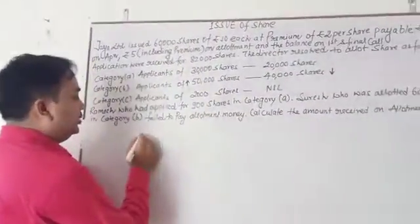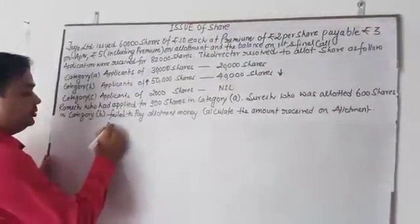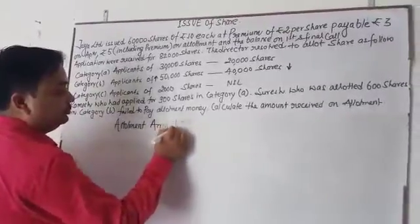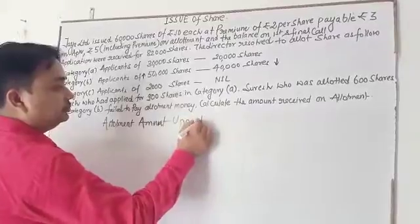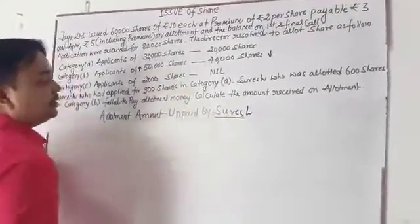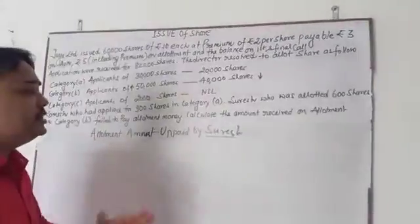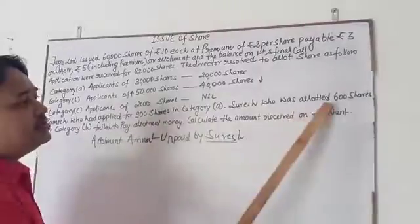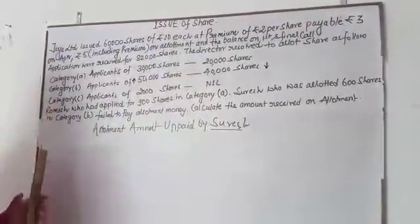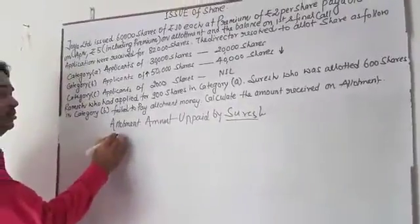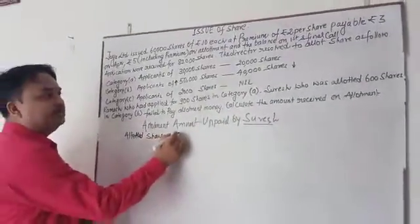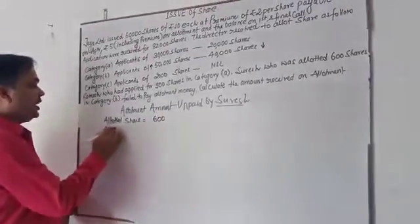You have to calculate the allotment amount unpaid — unpaid means not paid — by Suresh. Why are we going to calculate for Suresh? Suresh is a shareholder. The company has allotted him 600 shares. In this context it is just the reverse of the Ramesh case. Here the allotted share is given — 600. You need to calculate the applied shares.